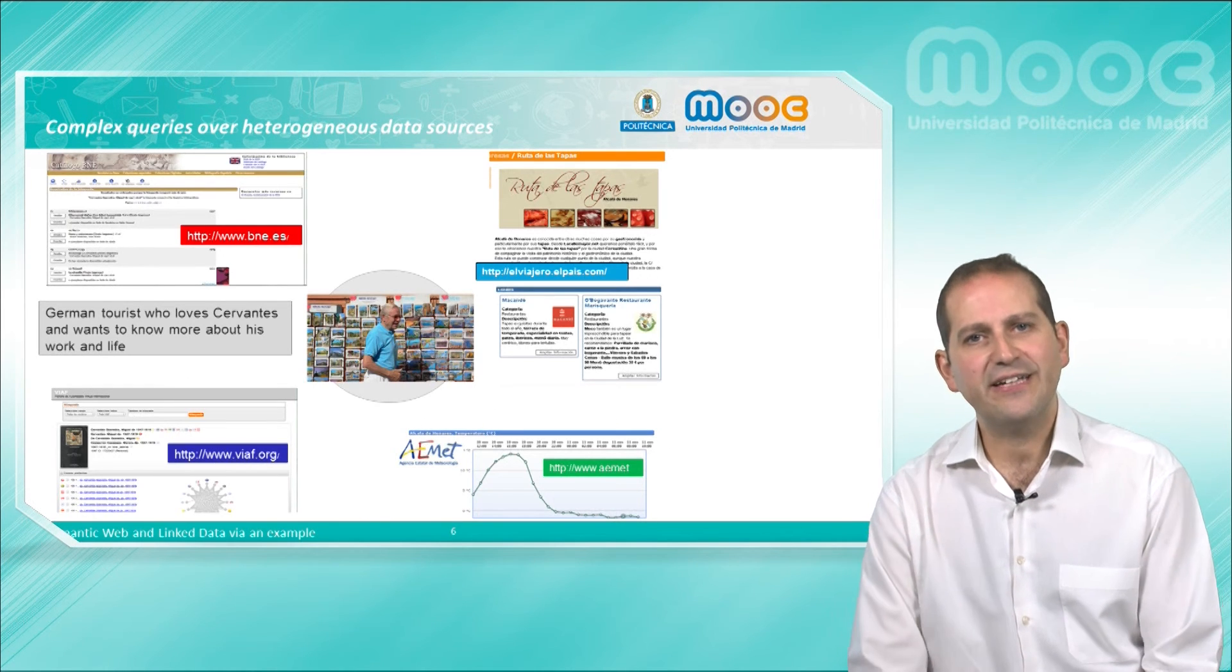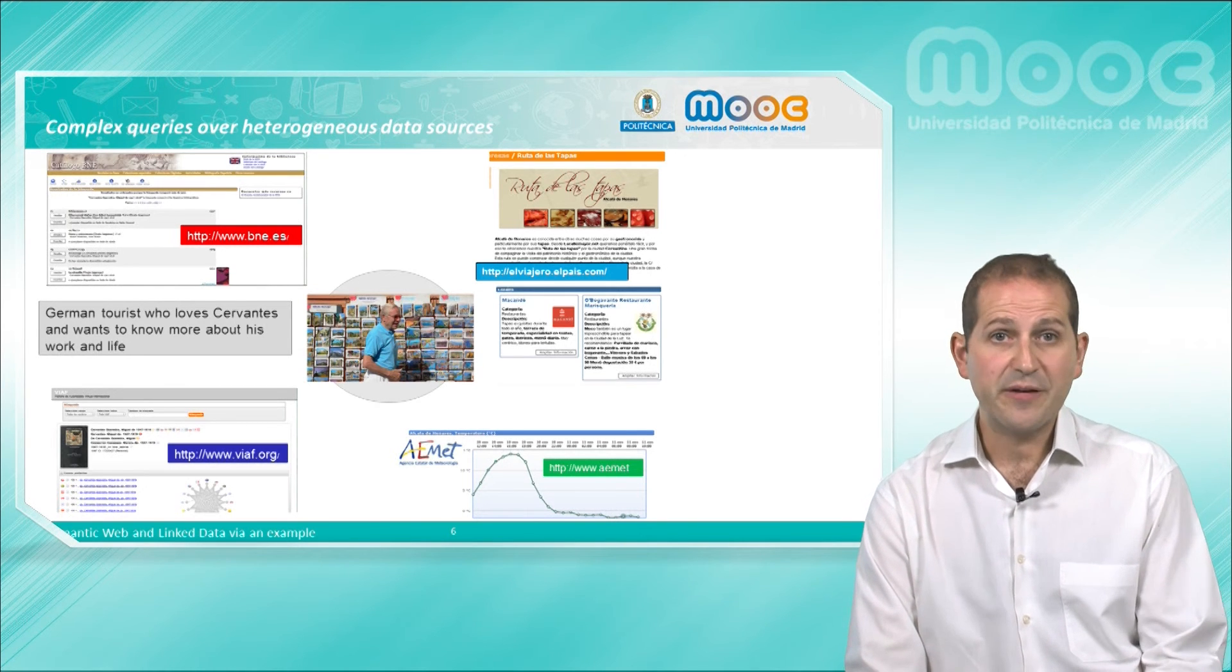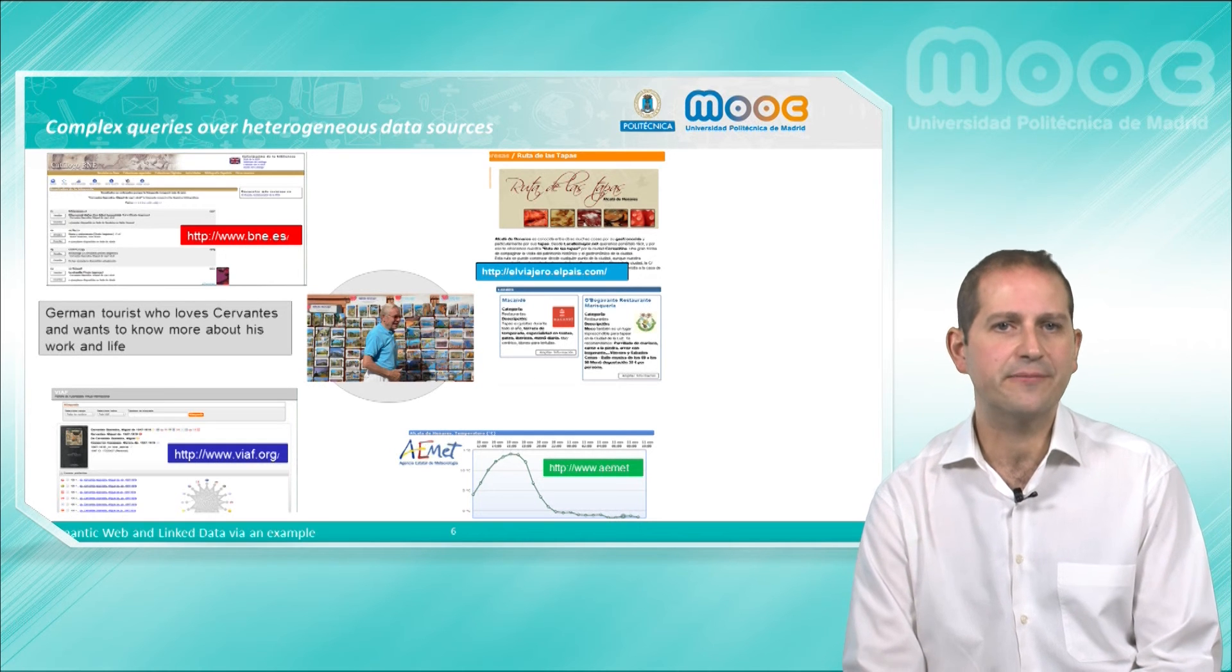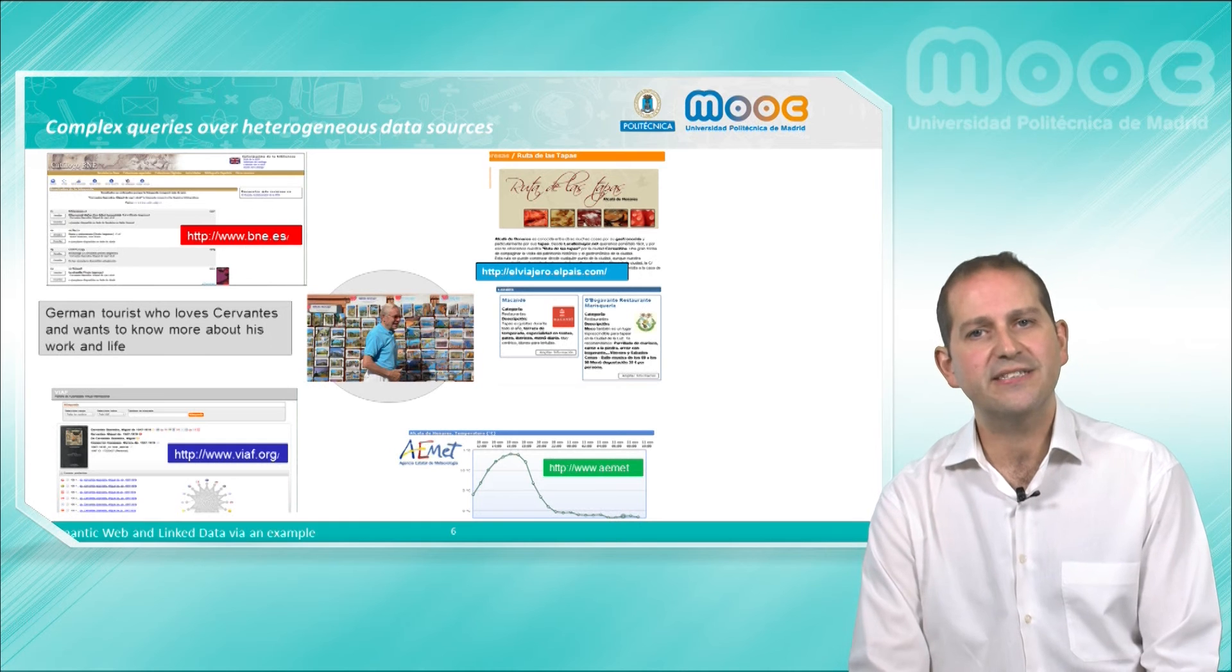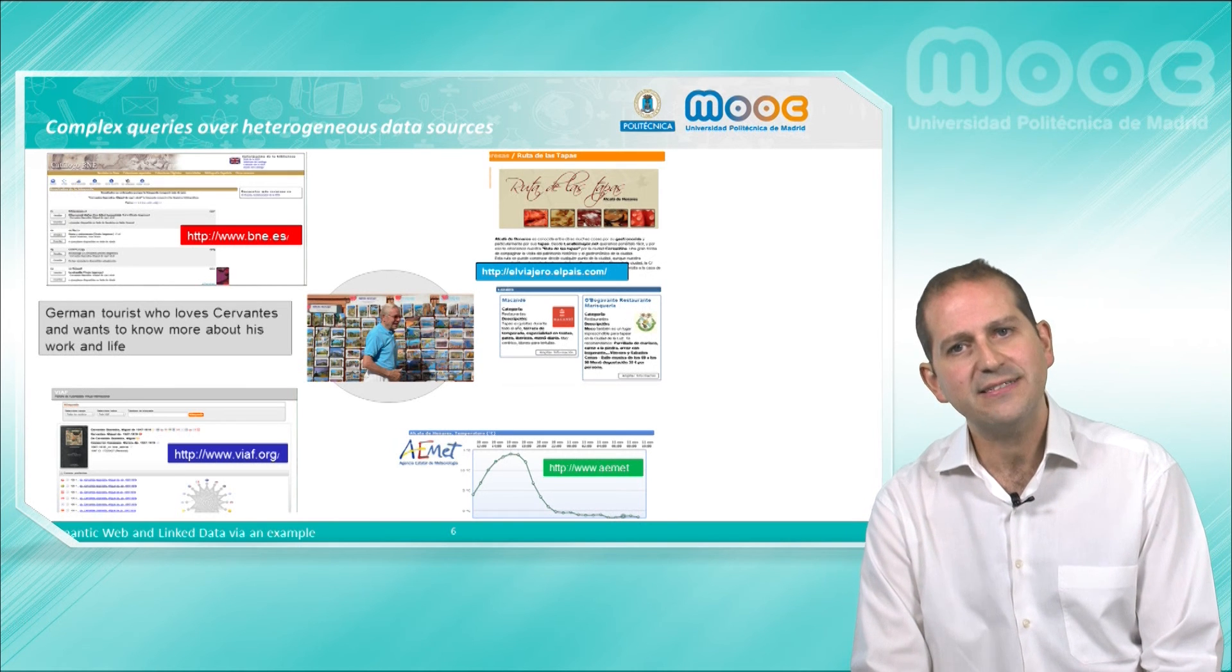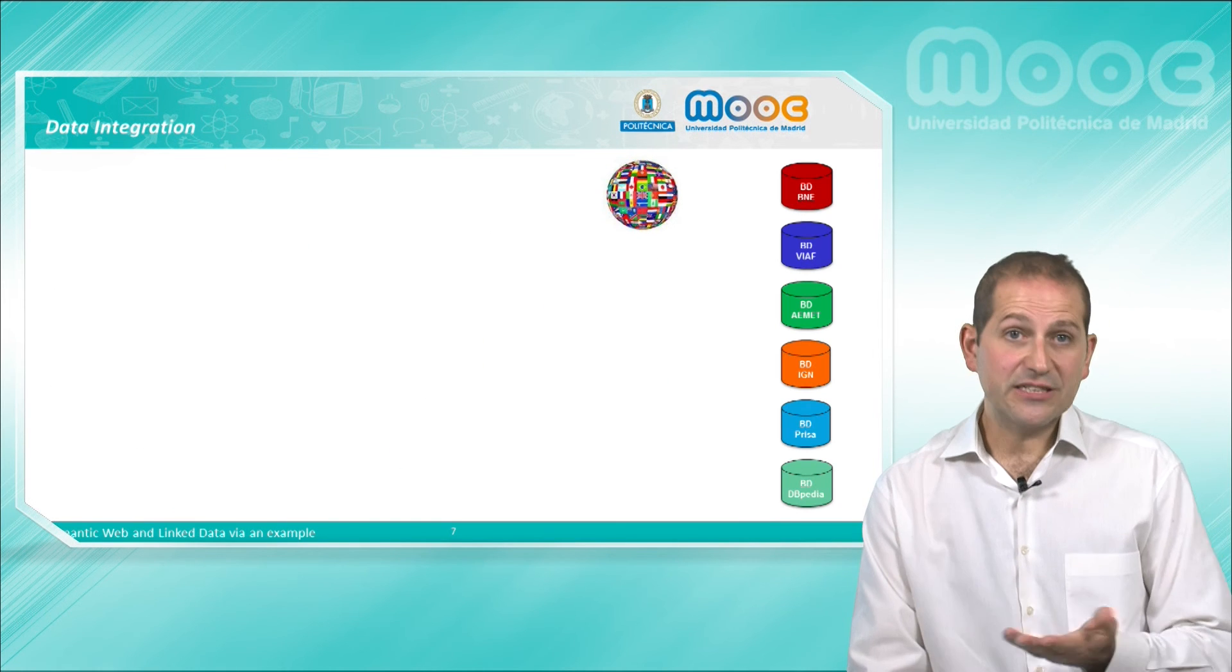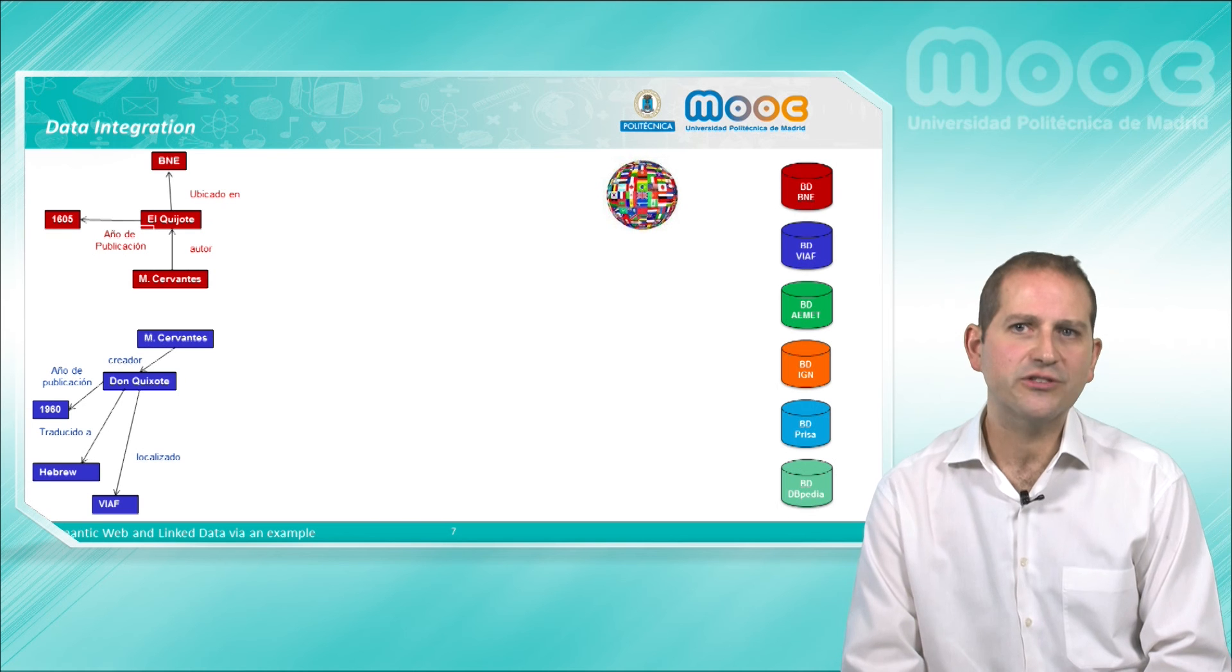Then we come into the original need for solving complex queries over heterogeneous data sources. This may be represented as shown in this slide, where a tourist is willing to know things about Cervantes from several sources. He wants to understand how to get to places where Cervantes was living by using an existing travel guide provider, for example. He wants to know a little bit more about Alcalá de Henares and have information as well about the weather at that place.